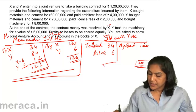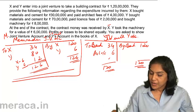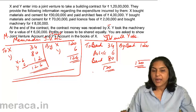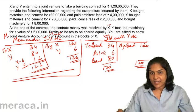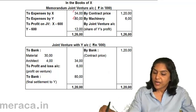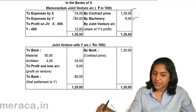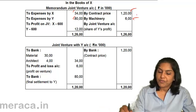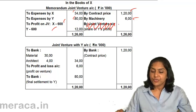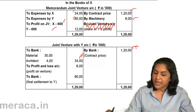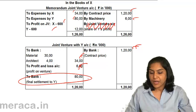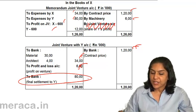Therefore, the balance: 120 less 40 gives us 80. Joint venture with Y account debit to bank — meaning X has to pay Y 80 lakhs. To summarize: the memorandum joint venture account shows expenses by X and Y on the left, and contract price plus machinery on the right, with profit of 6 lakhs each. In the joint venture with Y account, only entries of X have been passed — 34 lakhs expense, 120 lakhs income received by X, share of profit, and the final settlement to bank of 80 lakhs.